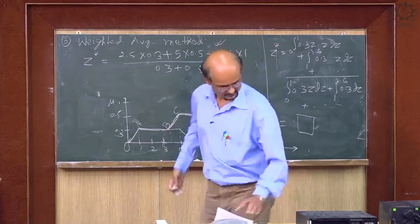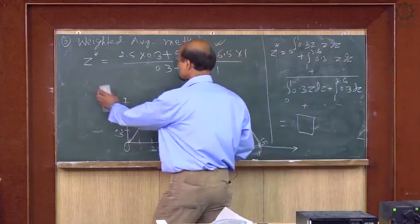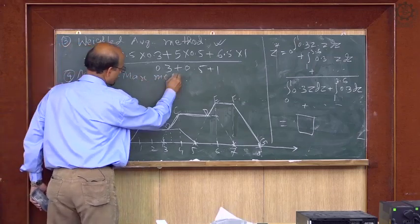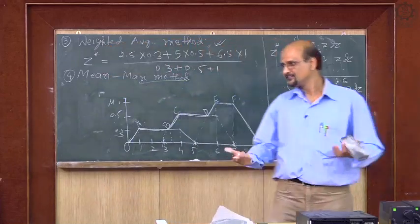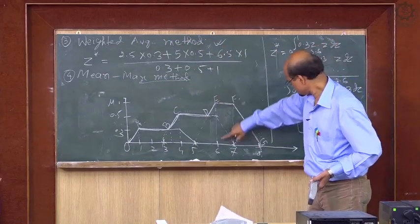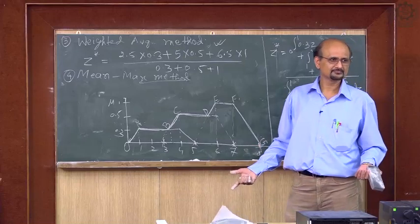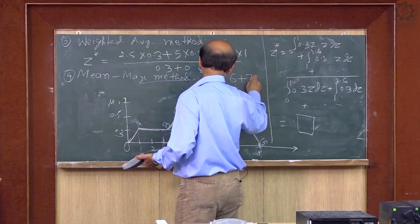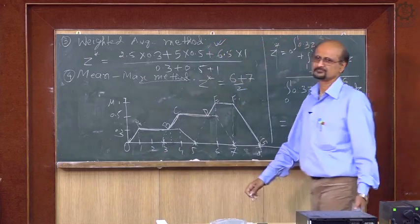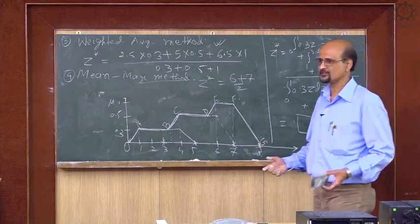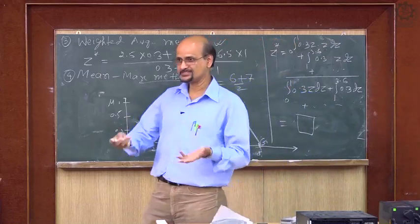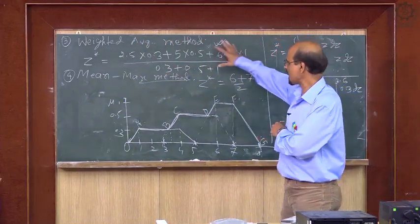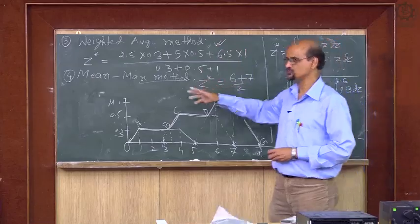The last and easiest method is the Mean Max method. The maximum membership here spans from 6 to 7, so z* = (6 + 7) / 2. In this way, you can defuzzify the output of a fuzzy system — after applying the fuzzy system you get output in terms of fuzzy sets and you find the one defuzzified value needed for your action.